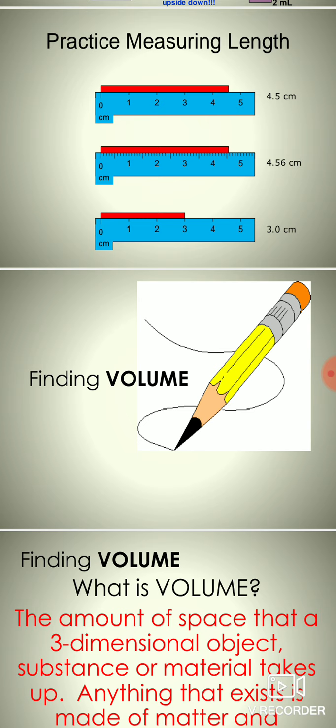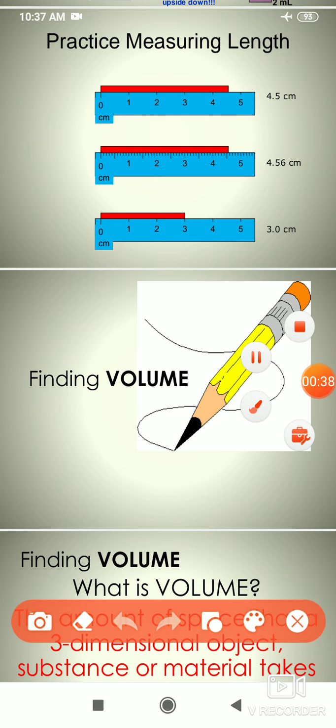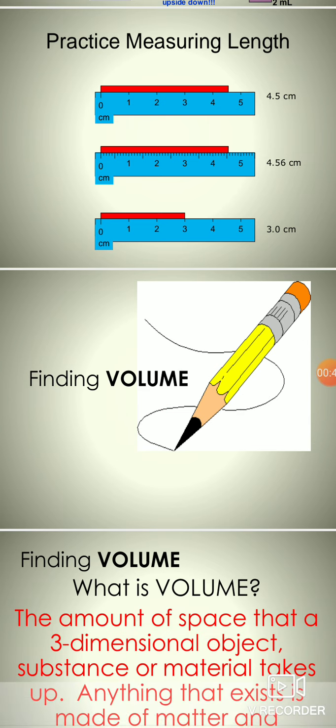First we will know about what is the meaning of volume of any substance. We already know mass means matter contained in any object. Next, we will try to understand about volume of any substance.